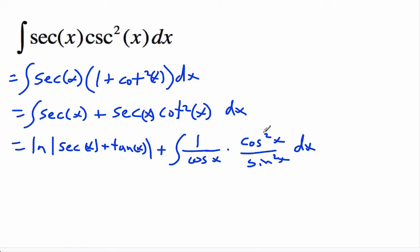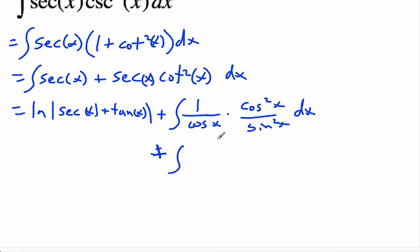When we do that, the cosines will cancel and we get the integral of cosine x over sine x times 1 over sine x.